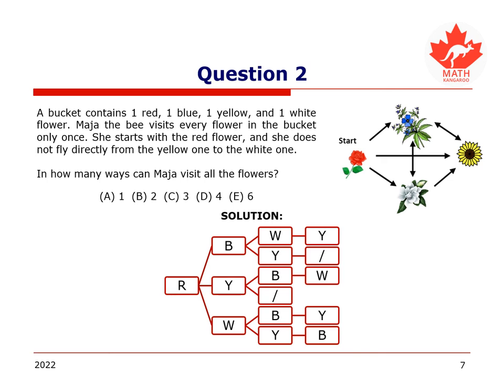If we start with R for red, we can either go to the blue flower, the yellow flower, or the white flower. And so we can either have the path R, B, W, Y, R, Y, B, W, R, W, B, Y, or R, W, Y, B, as we must remember that the yellow flower can never be followed by the white flower.